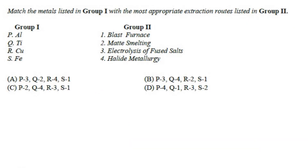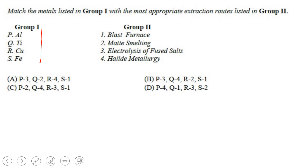Match the metals listed in Group 1 with the most appropriate extraction routes listed in Group 2. In Group 1 we have aluminum, titanium, copper, and iron, with corresponding extraction processes to match. We know that aluminum is extracted using the electrolysis method — electrolysis of fused oxide.